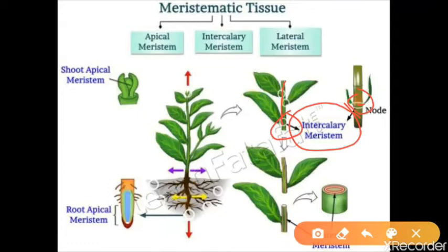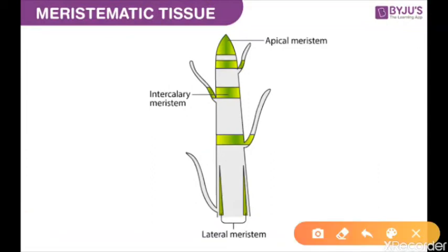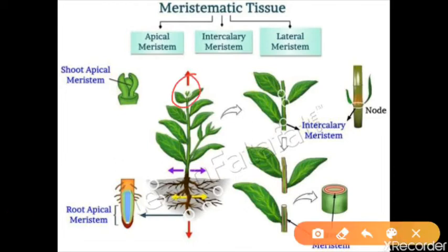So the apical part is responsible for upper growth. Intercalary tissue means the growth of the branches and stems is due to the intercalary. The last one is the lateral — the thickness of the stems is due to the lateral meristematic tissue. So the three are: apical in the top part, intercalary in the nodes, and lateral responsible for stem thickness.